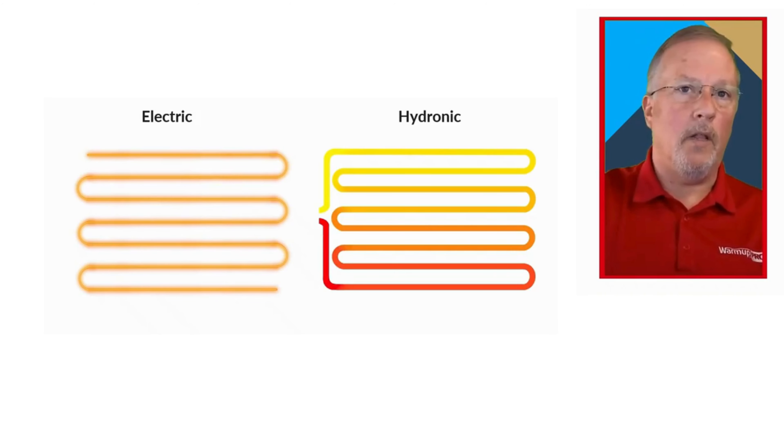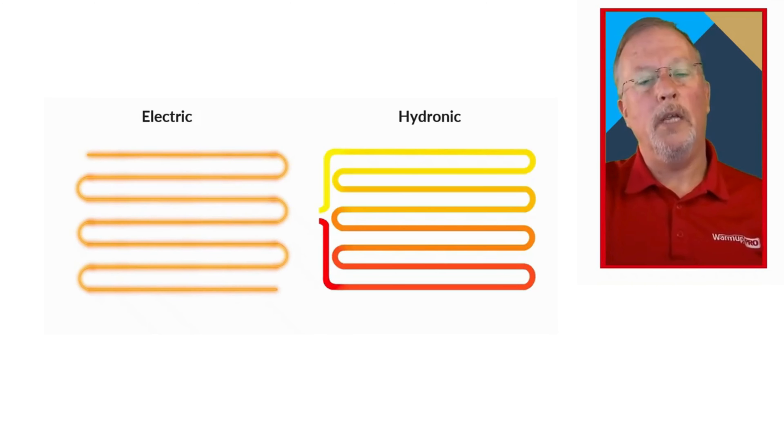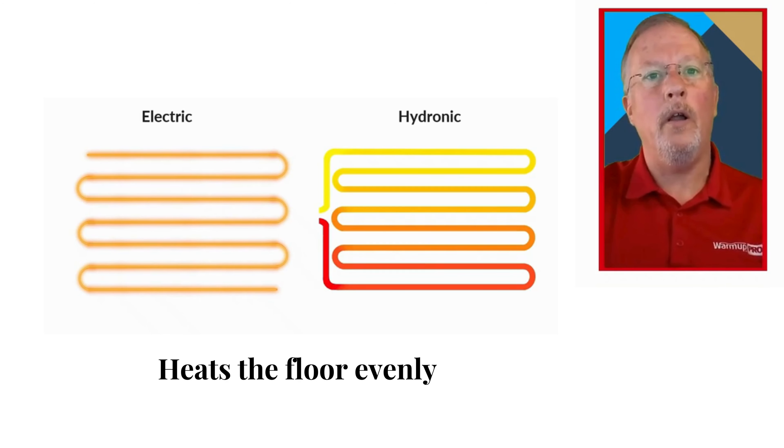Whereas electricity, it's using a heat-resistant cable, and it's converting electricity into heat along these heating cables that are in the floor. The big difference between the two systems is that electric radiant heat heats the floor evenly.